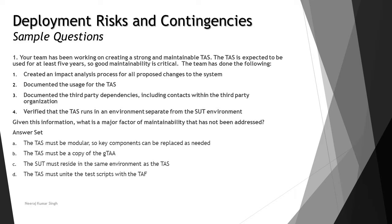Getting started with the first question: your team has been working on creating a strong and maintainable test automation solution (TAS). The TAS is expected to be used for at least five years, so good maintainability is critical. The team has so far created an impact analysis process for all proposed changes, documented the usage for the TAS, documented third-party dependencies including contacts within those organizations, and verified that the TAS runs in an environment separate from the SUT environment. Given this, what is the major factor of maintainability that has not been addressed?